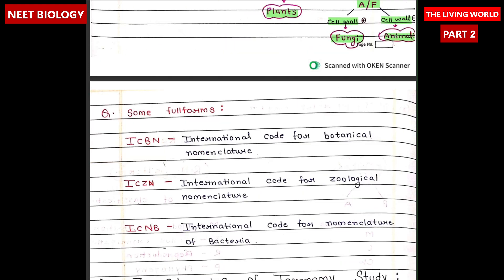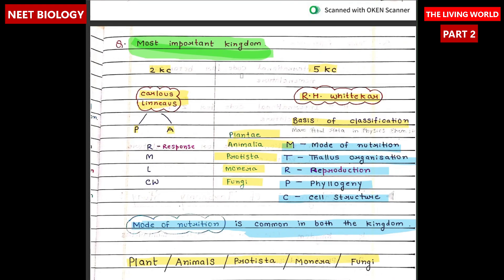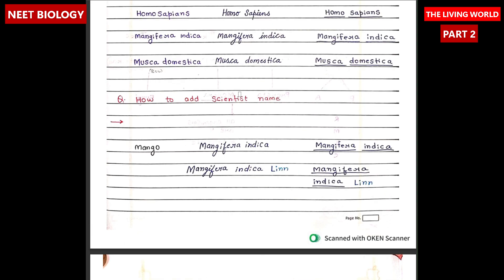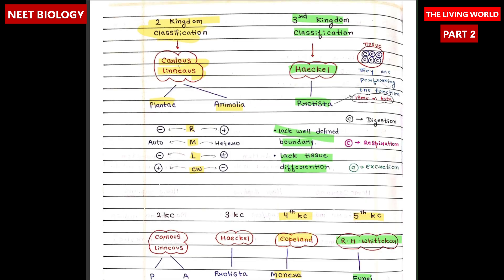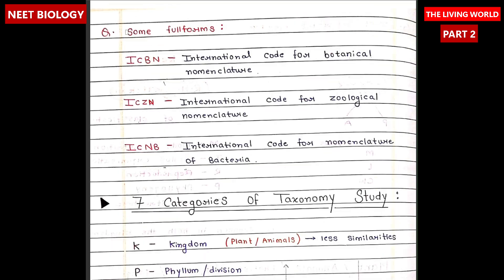Now let's see some important full forms. ICBN is International Code for Botanical Nomenclature. ICZN is International Code for Zoological Nomenclature. And ICNB is International Code for Nomenclature of Bacteria.